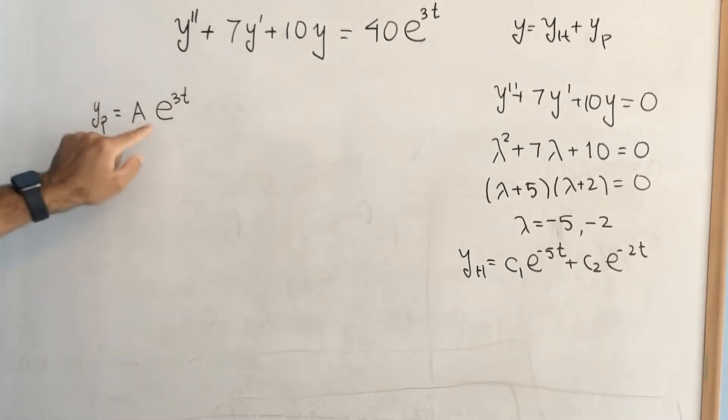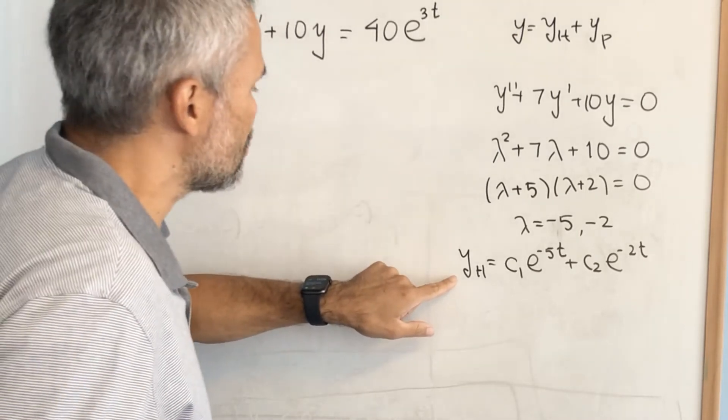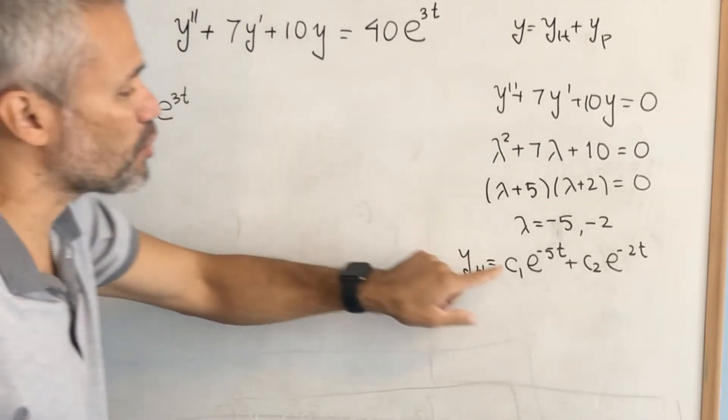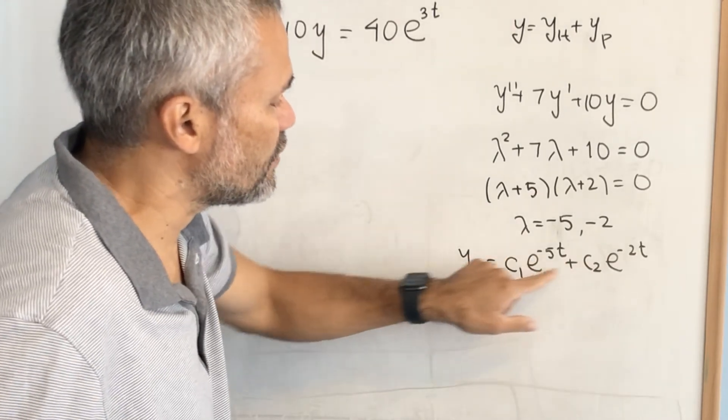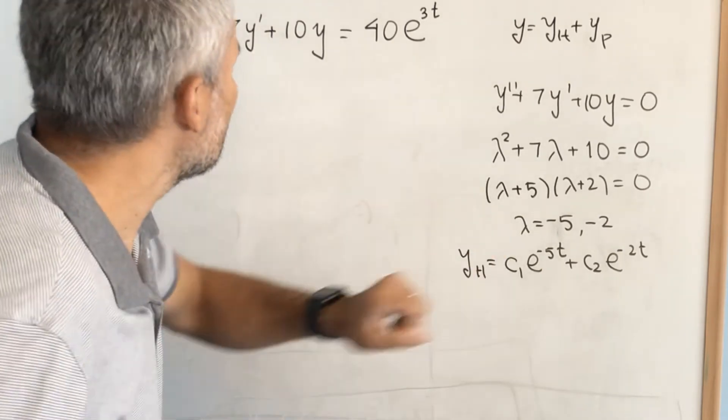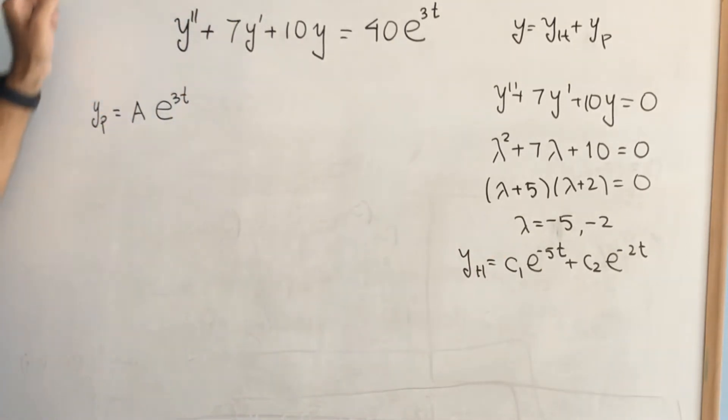We need to check if we need a second guess. To do that, we look at the solution of the homogeneous, and we need to see if this function is essentially a multiple of any one of these terms. They are not, they don't have the same exponent here. And therefore, we don't need a second guess.